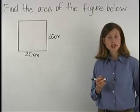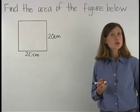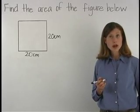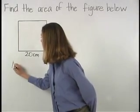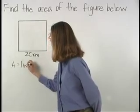To find the area of a square, start with the formula for the area of a rectangle, which remember is area equals length times width.